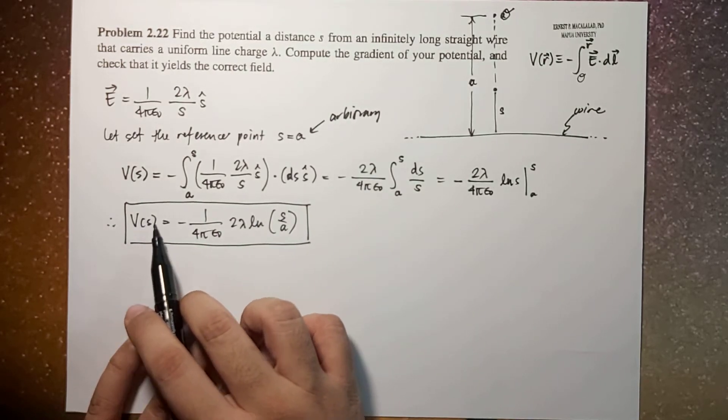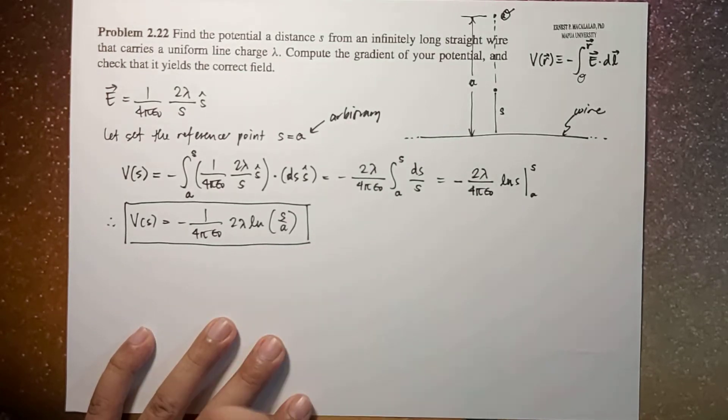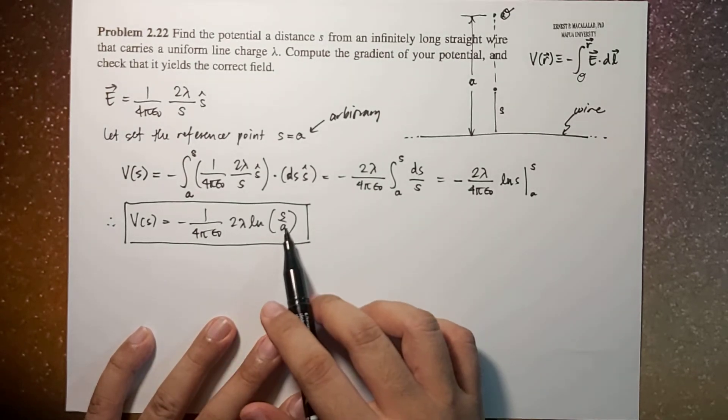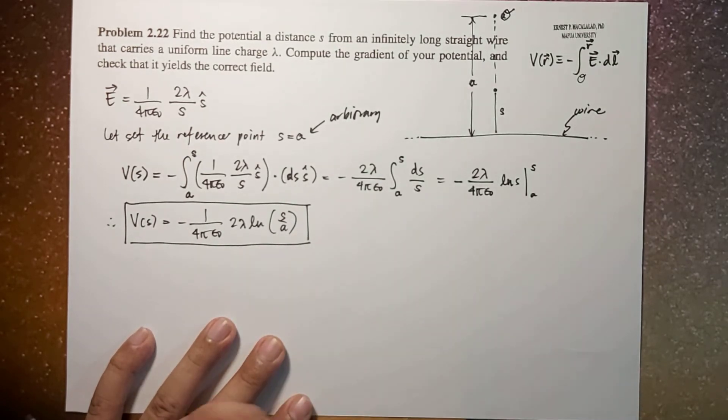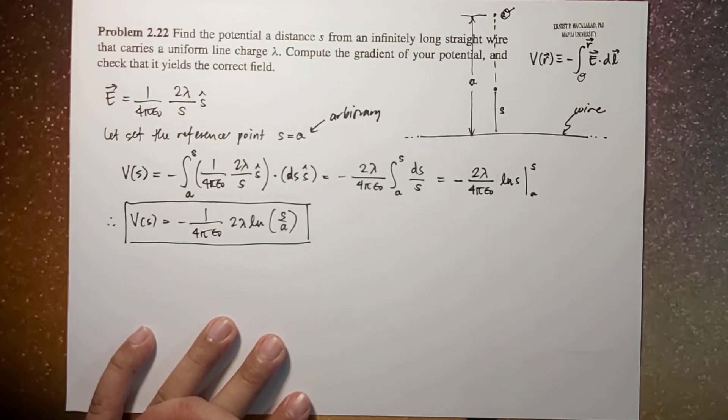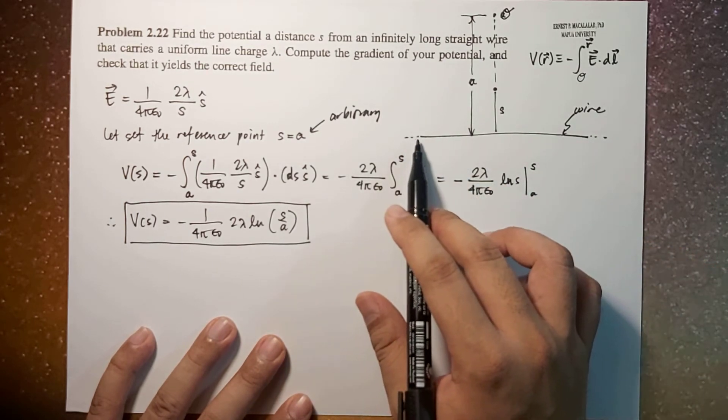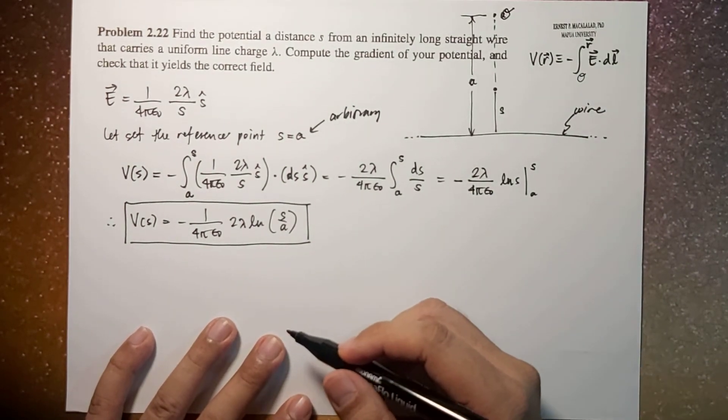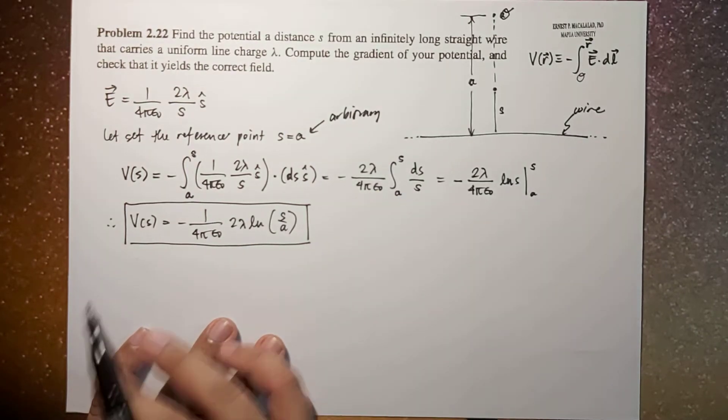for example, if a is infinity, this becomes s over infinity which will be indeterminate. So that means the potential at s cannot be determined if we set a to be infinity. The same goes for if we set a to be infinity, this becomes zero so ln of zero will be indeterminate. The same goes for if a is equal to zero, so that means a reference point would be at the wire itself which doesn't make sense. So again, a here will be an arbitrary reference point.